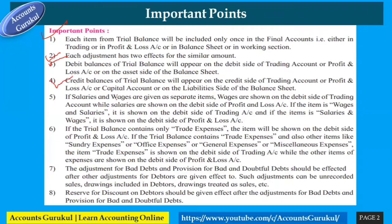Fourth point: credit balances from the trial balance will appear on the credit side of the trading account or profit and loss account, on the capital account, or on the liability side of the balance sheet. Whatever is on the credit side of the trial balance must be taken to the credit side of trading, profit and loss, capital, or liability side of the balance sheet.